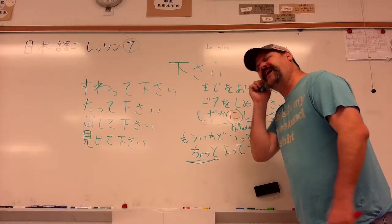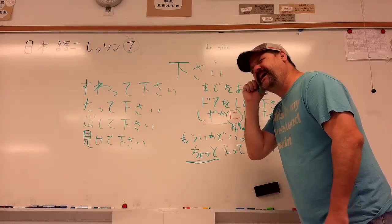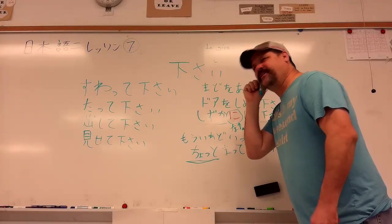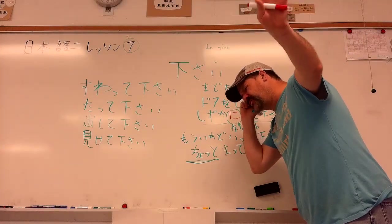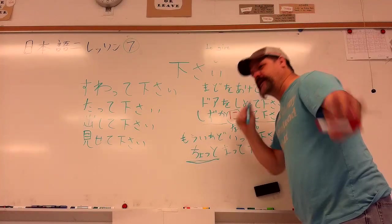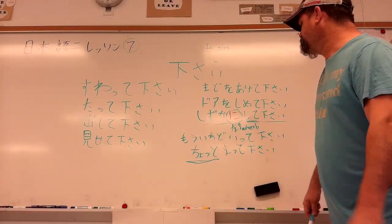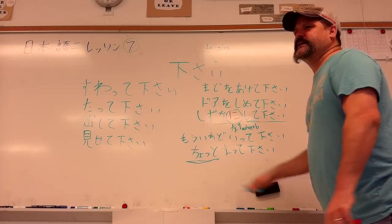And it can also be used for like if somebody, like say you're on the phone. You're like, moshi moshi, hai, hai, hai. And then someone comes to you and tries to talk to you. And you're like, chotto, chotto. It's a way of waving someone off as well.